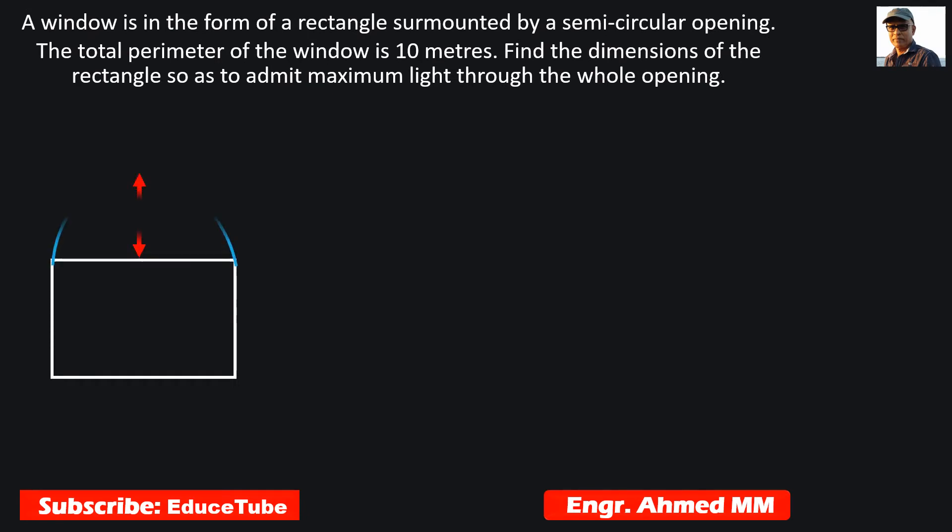Hi everybody, here I have taken a window. It is in the form of a rectangle surmounted by a semi-circular opening, and the total perimeter of this window is 10 meters. Find the dimensions of the rectangle so as to admit maximum amount of light through the whole opening.